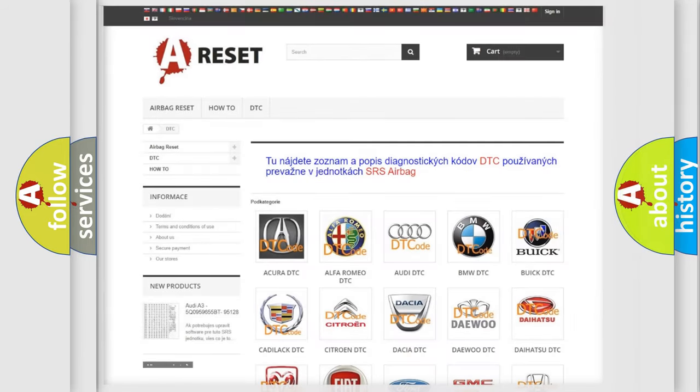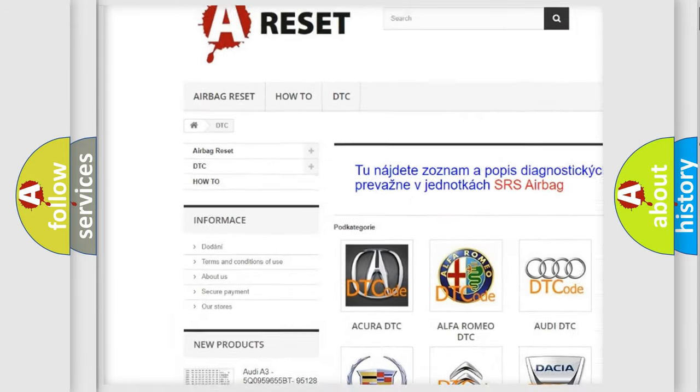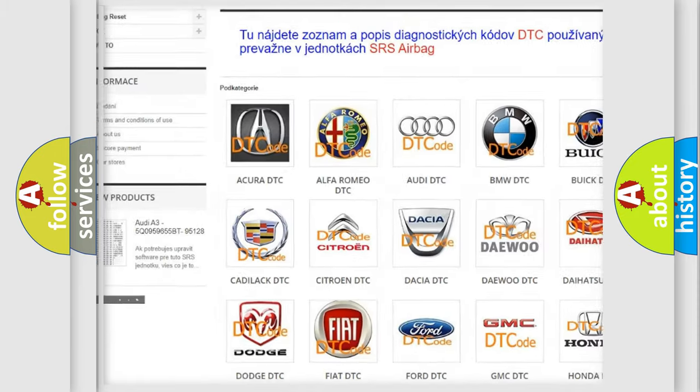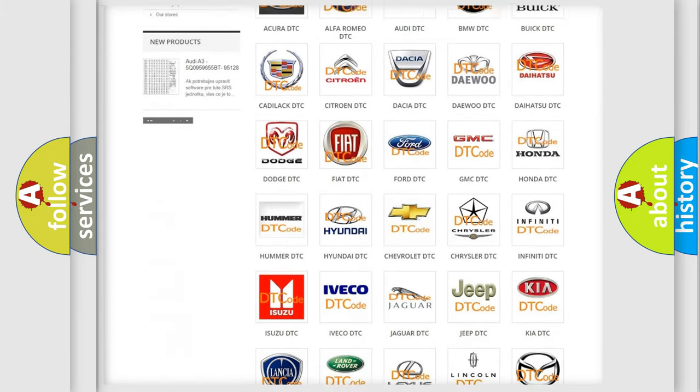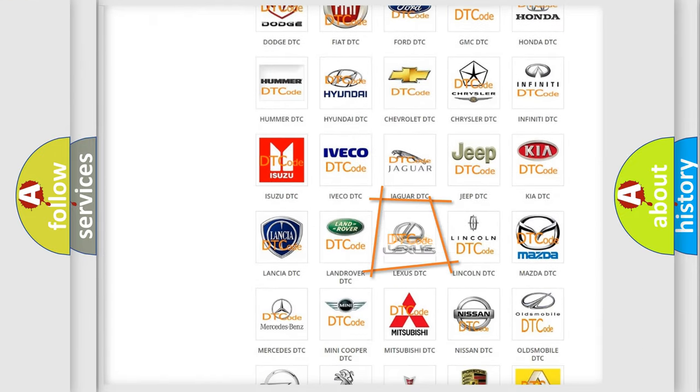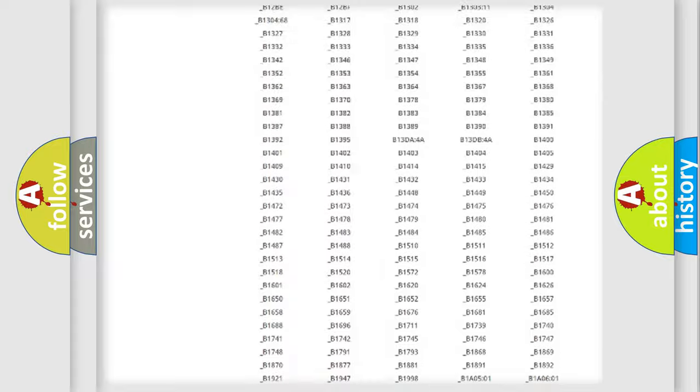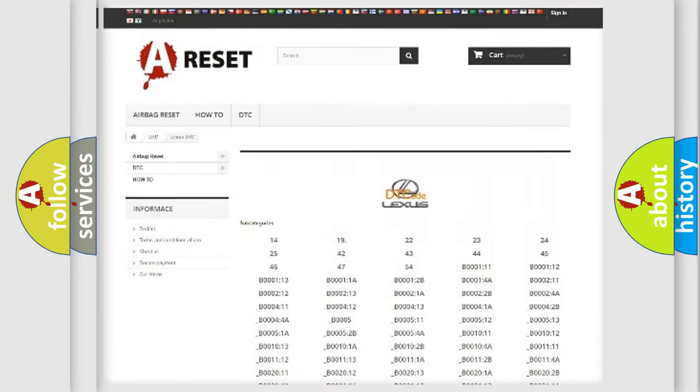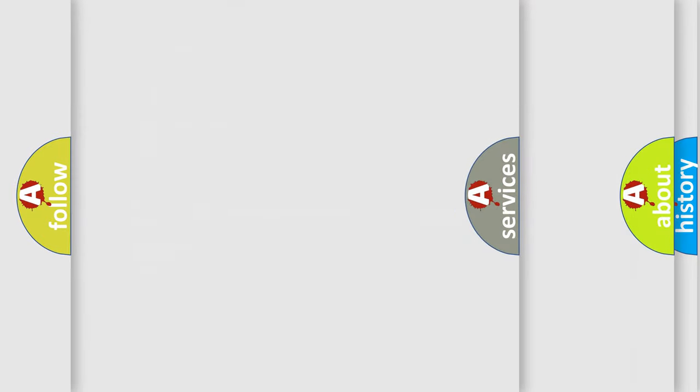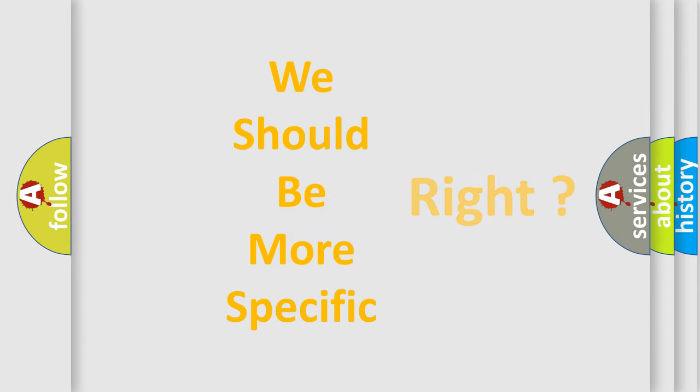Our website airbagreset.sk produces useful videos for you. You do not have to go through the OBD2 protocol anymore to know how to troubleshoot any car breakdown. You will find all the diagnostic codes that can be diagnosed in Lexus vehicles, also many other useful things. The following demonstration will help you look into the world of software for car control units.